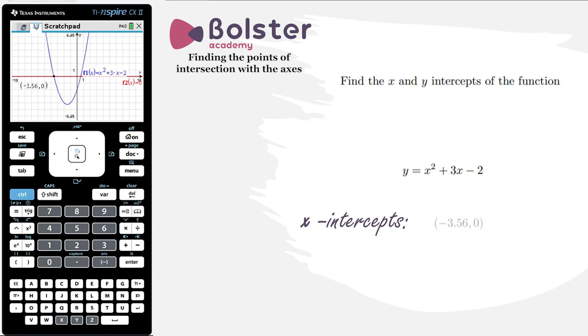Here we can see the x-intercept is at minus 3.56 and that's only to three significant figures. If I needed this to a higher degree of accuracy, I need to go into the calculator and change my float settings. So this is the first intercept.